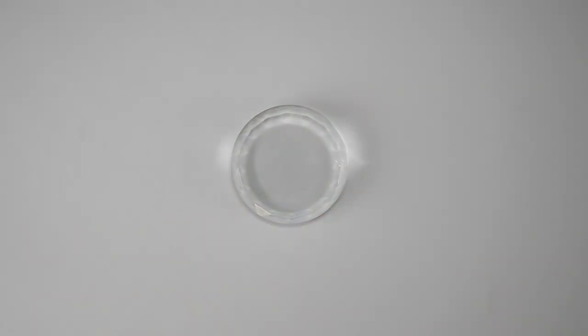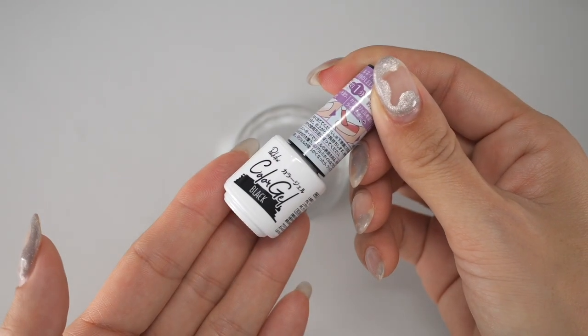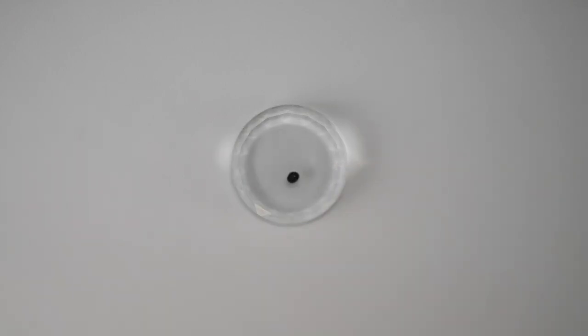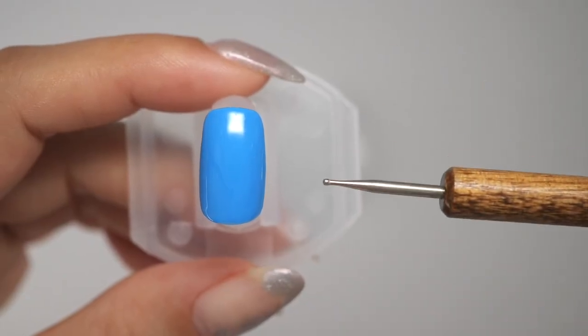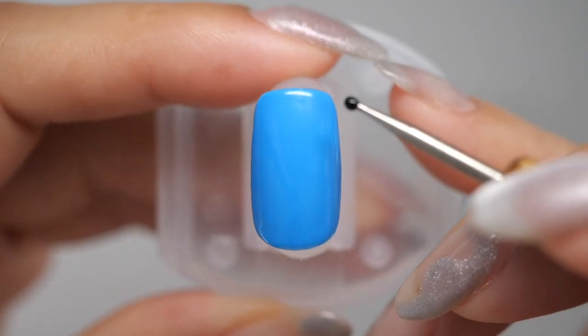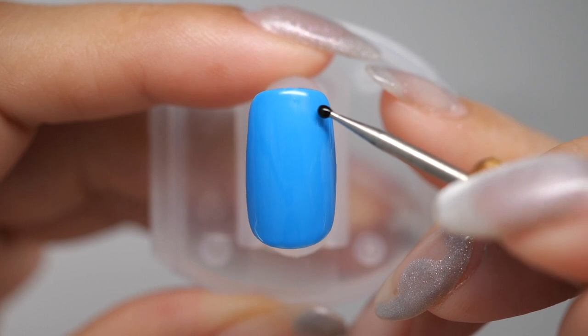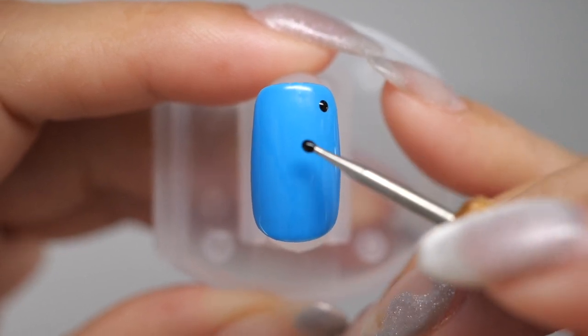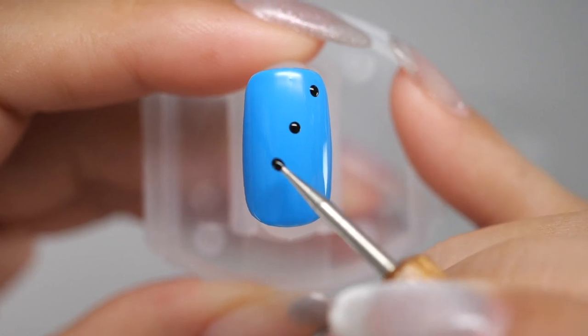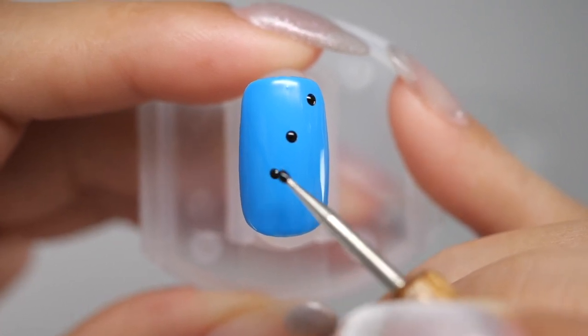Then prepare a palette and take out a small amount of black. Next, use a dot pen or a toothpick to draw black dots. Apply black gel to the dot pen and draw four dots diagonally from the top right to the bottom left. Draw the dots as evenly spaced as possible.